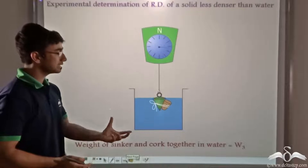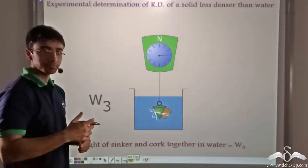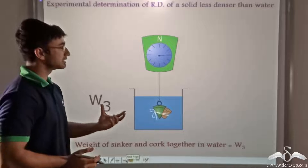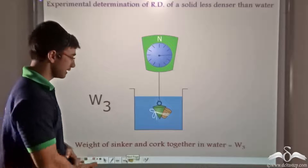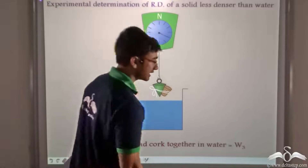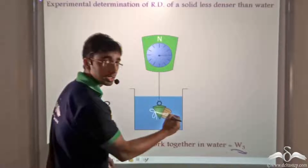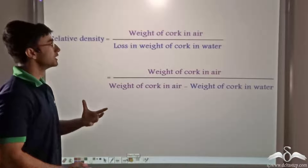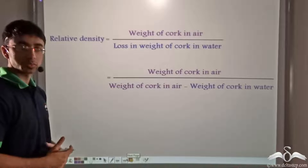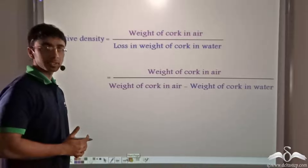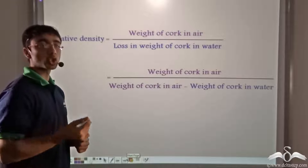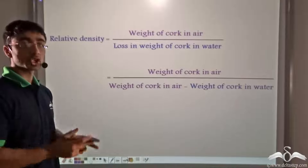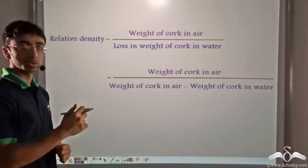Next we tie the metallic sinker and cork together and then dip the entire thing in water. We can easily find out this weight, read directly from the scale as W3. So now we have three values: W1 is the weight of sinker in water, W2 is the weight of sinker in water and cork in air, and W3 is the weight of sinker and cork both in water.